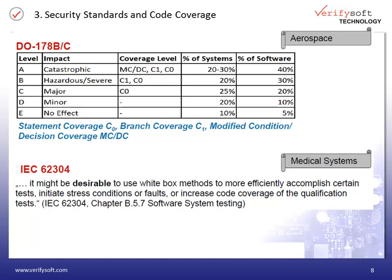Modified Condition Decision Coverage, or MCDC coverage, is also very important in the aerospace standard DO-178C. Like the other standards, DO-178C requires high coverage levels for high safety levels. The different DO-178C levels are defined according to the possible consequences of a software error. For level A, a software error would have a catastrophic impact. For level B, it would be hazardous or severe. For level C, it is still major. And there is no surprise: for the highest level A, 100% MCDC coverage is mandatory.